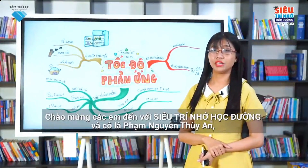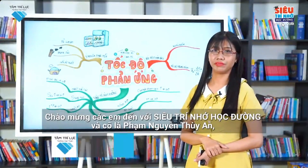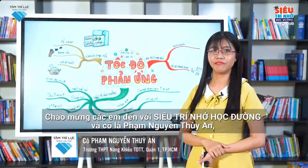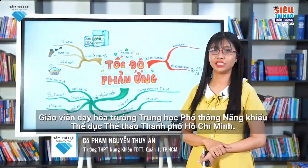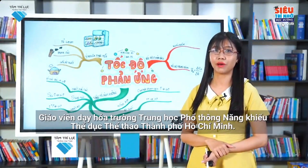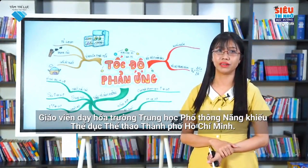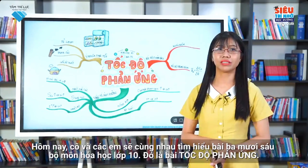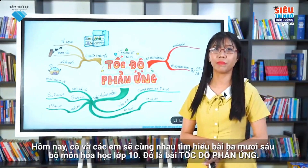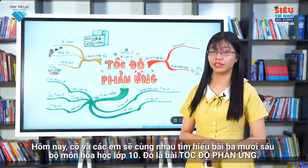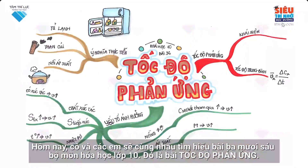Welcome to the Supermemory for Schools program. My name is Pham Nguyen Thuy An. I'm a chemistry teacher in high school for gifted sports and physical education in Ho Chi Minh City. Today, we will learn together lesson 36 of 10th grade chemistry — reaction rate.